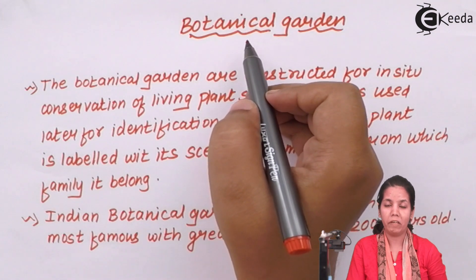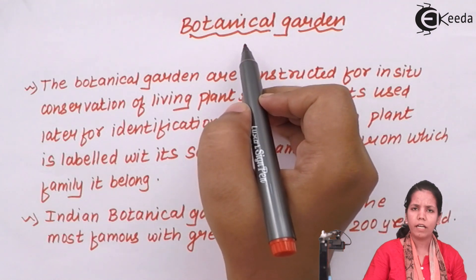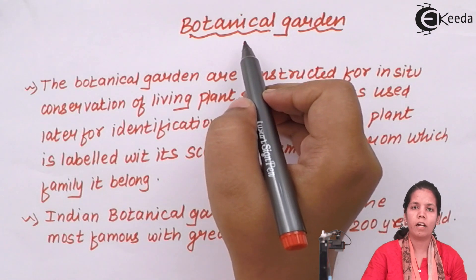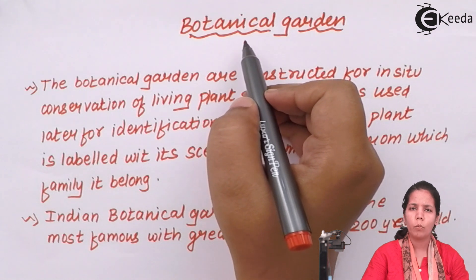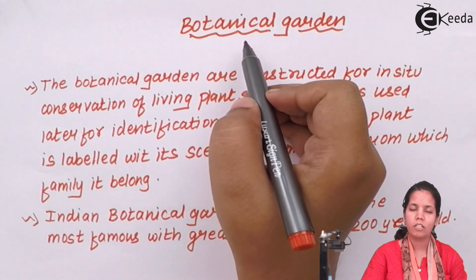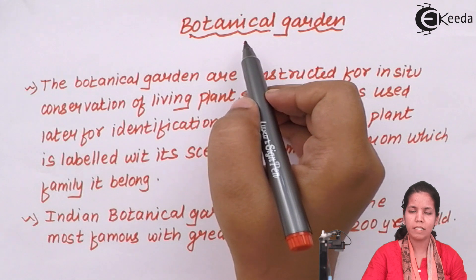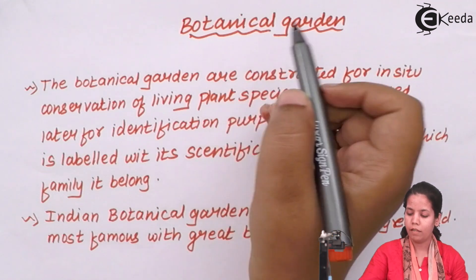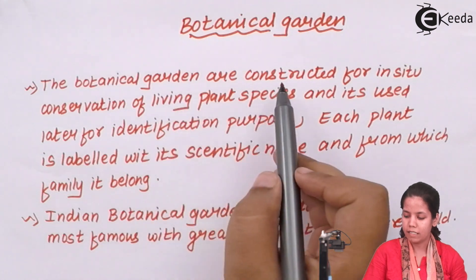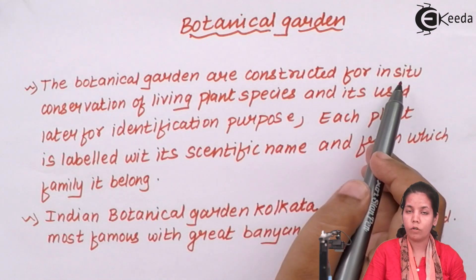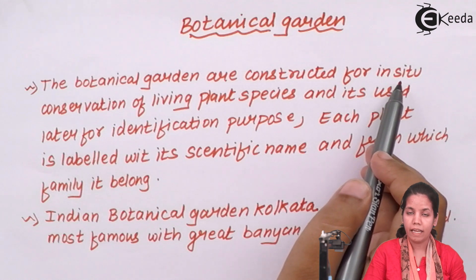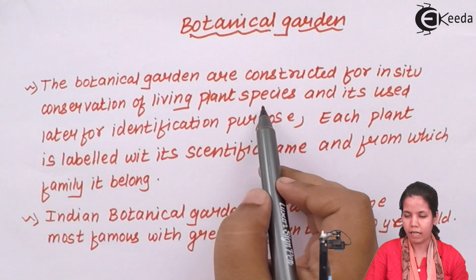Botanical gardens are very different from normal gardens. Normal gardens have different types of plants without any order or preference, planted just for beauty, respiration, and recreation. But botanical gardens follow a pattern — they are constructed for in-situ conservation, meaning plants are kept in their natural environment in and around soil for conservation of plant species.